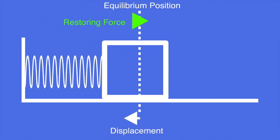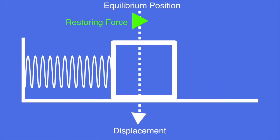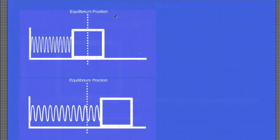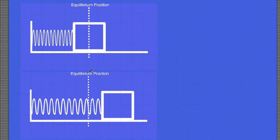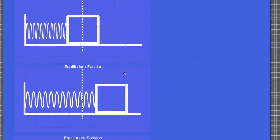Let's look at the energy stored in a spring when it is compressed or stretched. Let the equilibrium position be the position when the spring is neither stretched nor compressed. On the second frame, we stretch the spring to an initial position and we label this position as x sub 0.